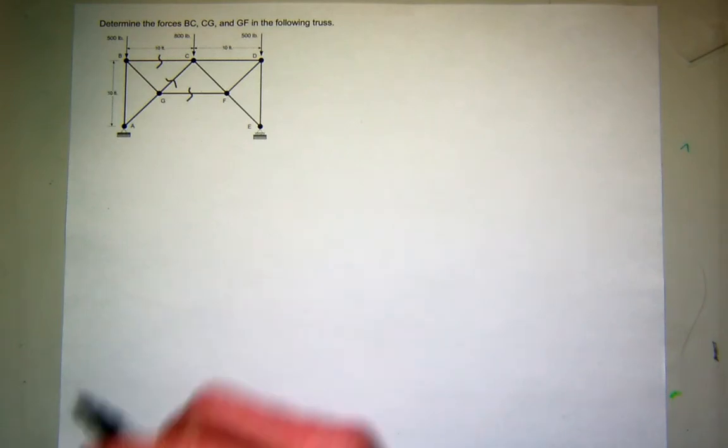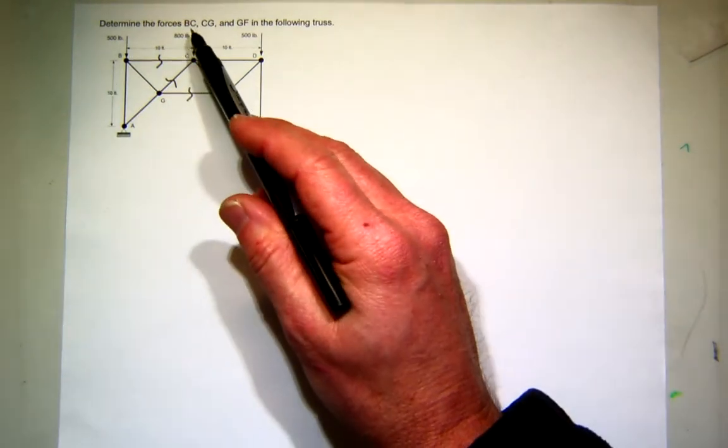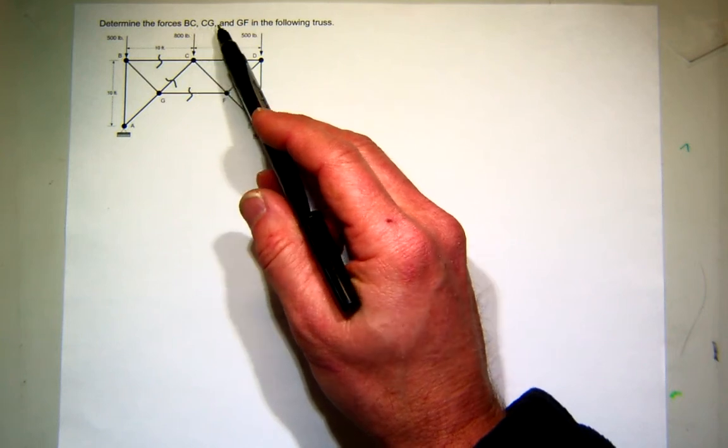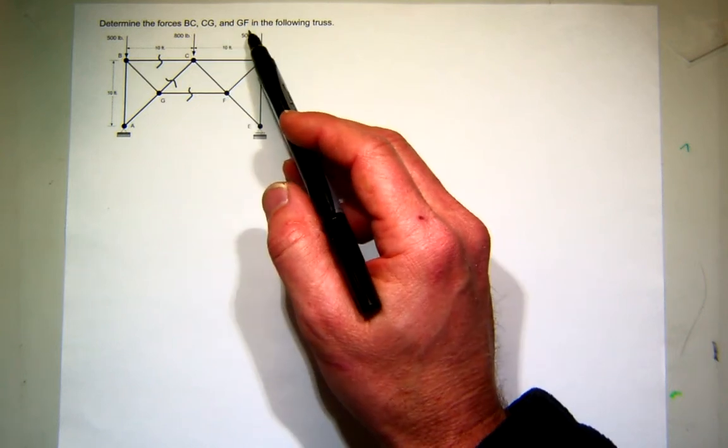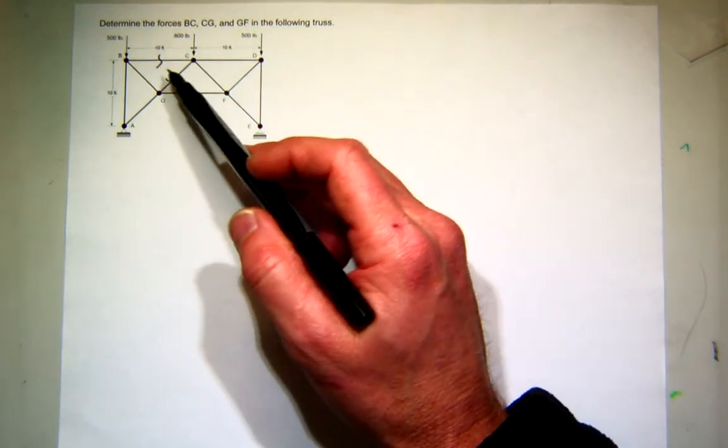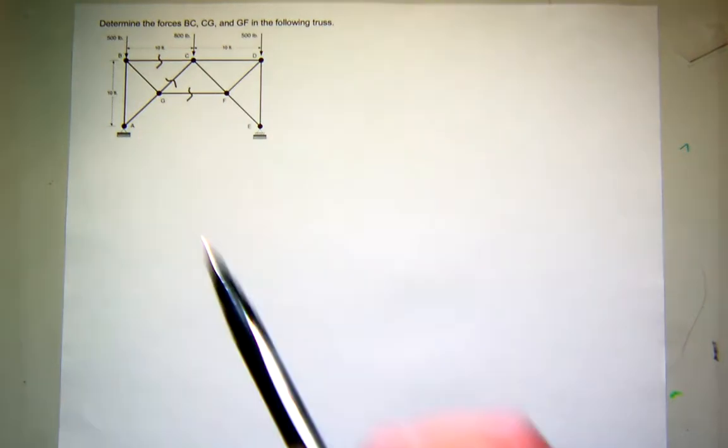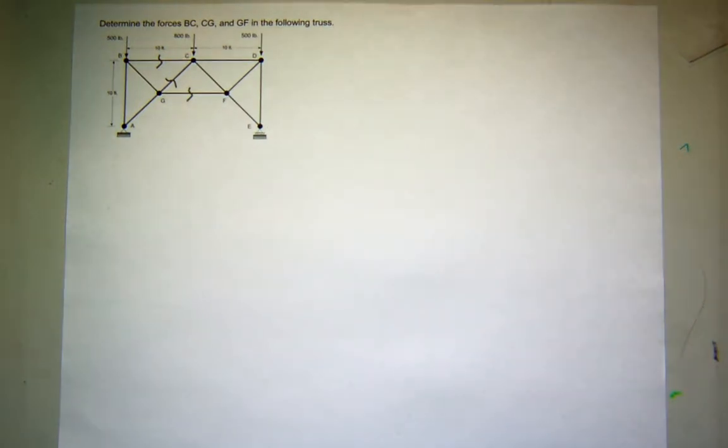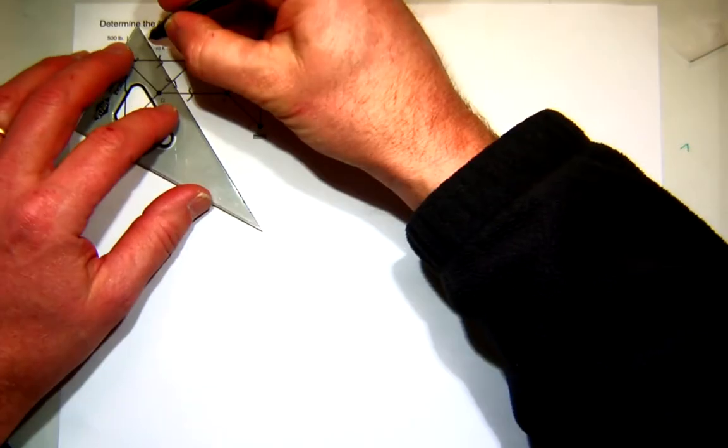Okay, here's another truss problem. You can see from the statement that we just want the force in BC, CG, and GF. I went ahead and marked those with these little squiggly lines. Again, you can see that forms a nice little section that we could cut.